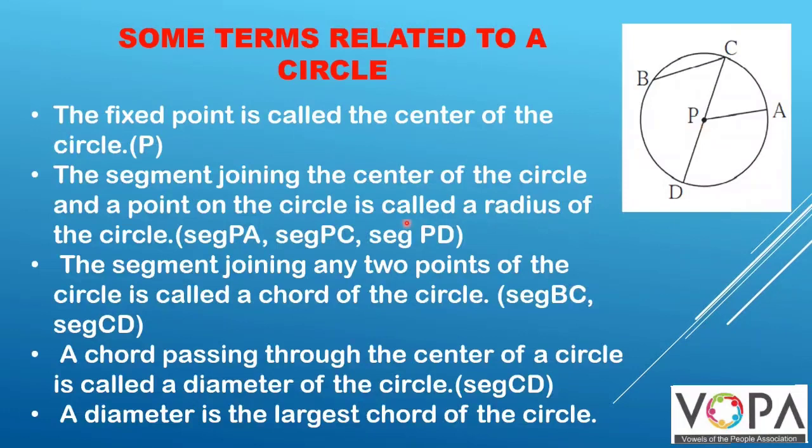The segment joining the center of the circle and a point on the circle is called a radius of the circle. Here PA, PC and PD are the radii of the circle.